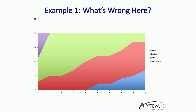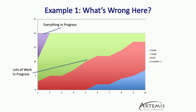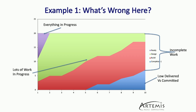Let's take an example of a cumulative flow diagram for a team that is not doing well. Everything went into progress very quickly — we have 20 items, and by day two, none of those items were still marked as ready. Everything was at some level of being worked on. By day five, we still have all 20 items at some state of being in progress. We have a lot of incomplete work at the end of the sprint — almost all of those items weren't completed. We end up with less than 50% of the items we committed to actually delivered at the end of the sprint.